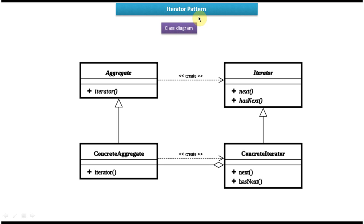Now we will see the class diagram of the Iterator Design Pattern. On the right side you can see Iterator — it's a base class or interface, and it contains next and hasNext methods. Concrete Iterator implements this Iterator interface and provides the implementation of next and hasNext methods. On the top left side you can see the Aggregate interface, which has an iterator method and is implemented by Concrete Aggregate to provide the implementation of that iterator method.